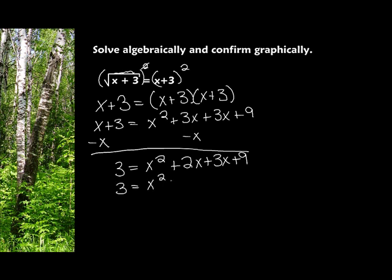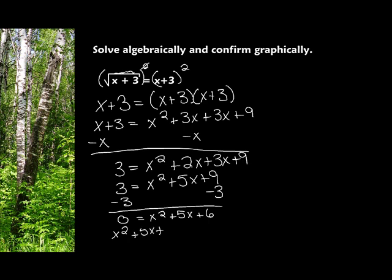3 equals x squared plus 5x plus 9. I'm going to subtract 3 from both sides of the equation. So I get 0 equals x squared plus 5x plus 6. Now some of you like to see it like this: x squared plus 5x plus 6 equals 0. They're the same thing.